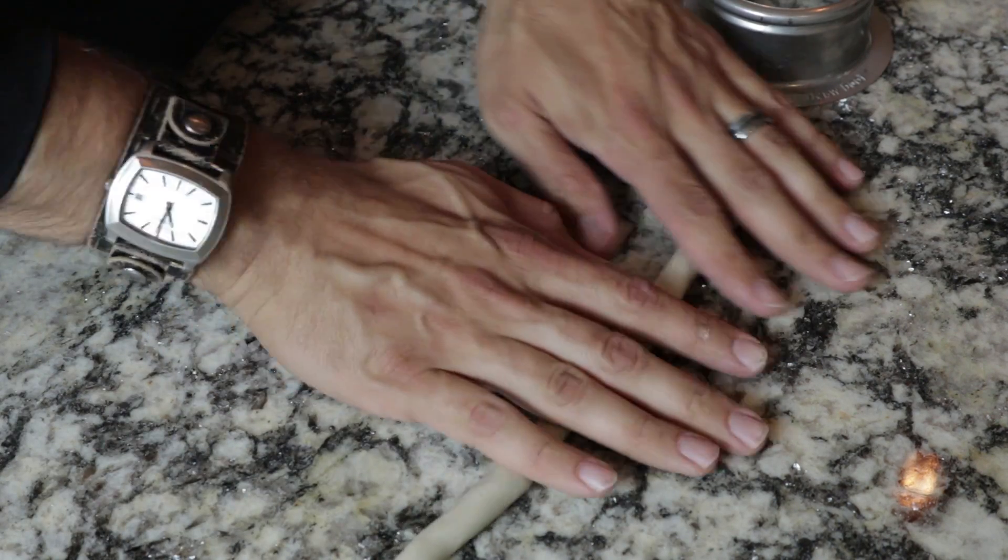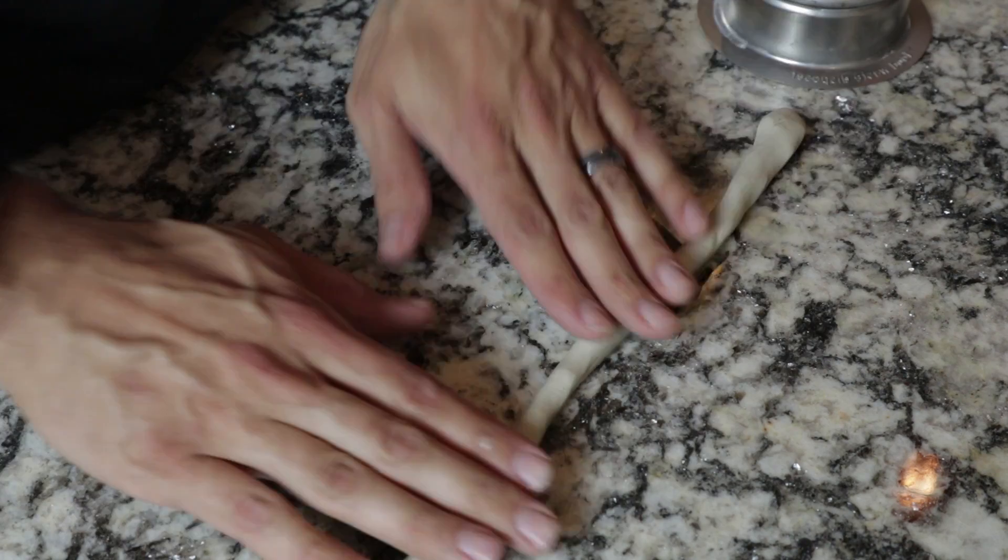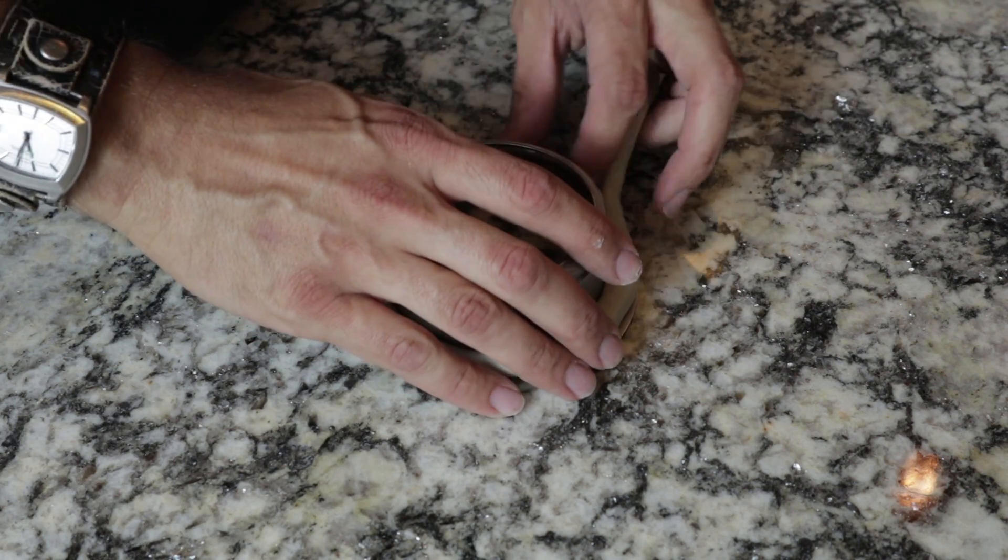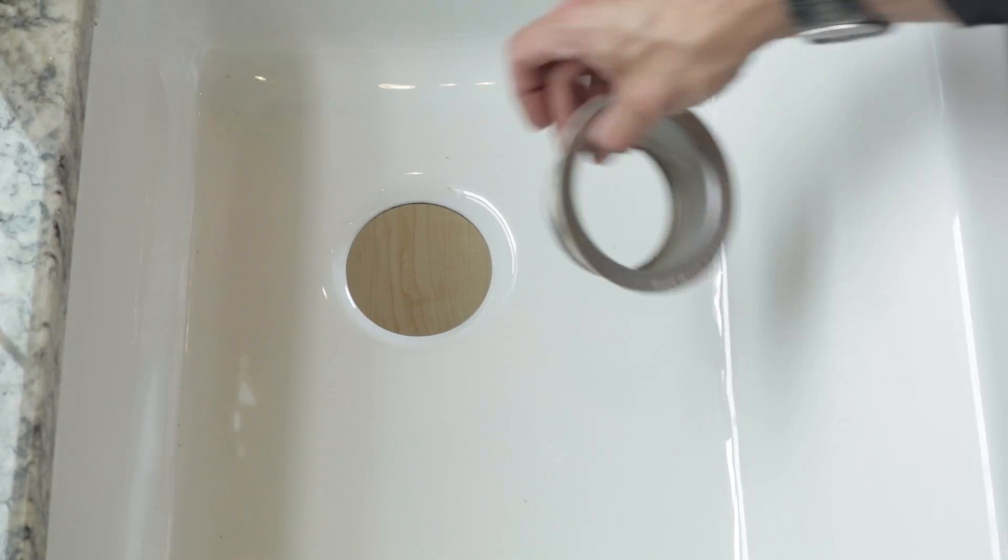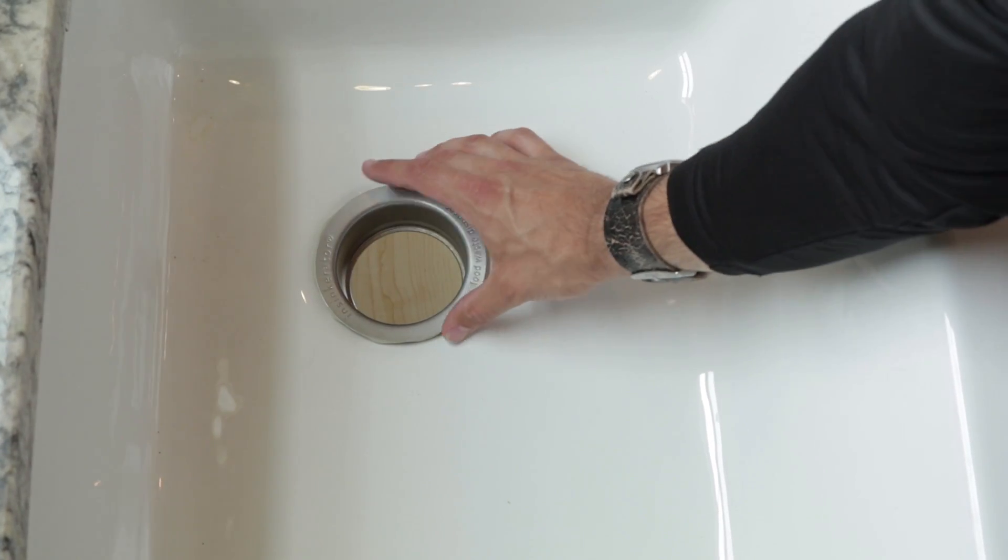Roll out a bead of plumber's putty about the size of a dime. Wrap the putty around the base of the sink flange and press and smooth firmly. Insert the flange into the sink drain hole and press down.